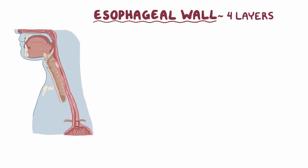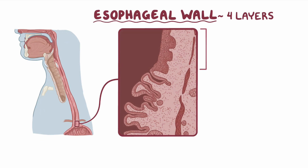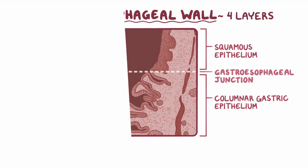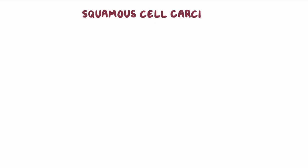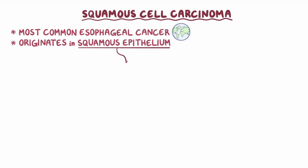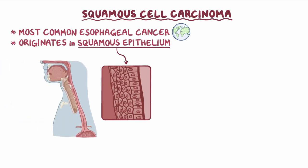At the lower esophageal sphincter, the squamous epithelium joins the columnar gastric epithelium to form the gastroesophageal junction. Squamous cell carcinoma is the most common type of esophageal cancer worldwide, and it originates in the squamous epithelium of the esophagus, most often in the upper two-thirds.